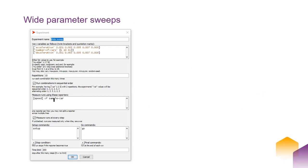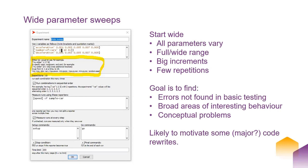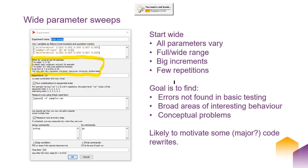So why do sweeps? You choose the variables — all the variables in your model that can vary — and set them up depending on how you want them to vary. You can set them at specific points or within a range according to a certain increment. For a wide sweep: all parameters varying, a full or wide range, big increments, few repetitions. The goal is to find errors not found in basic testing, broad areas of interesting behavior, and conceptual problems.